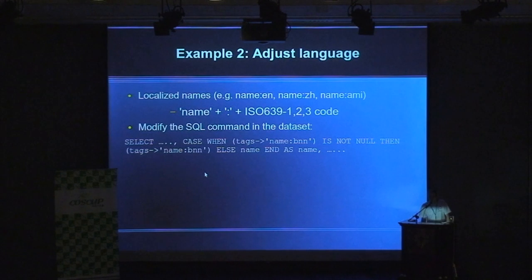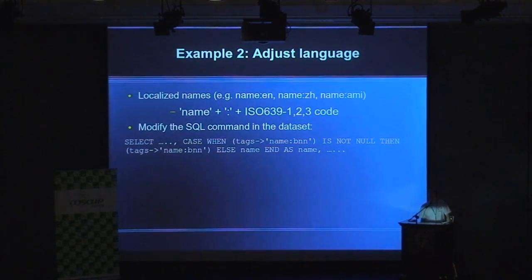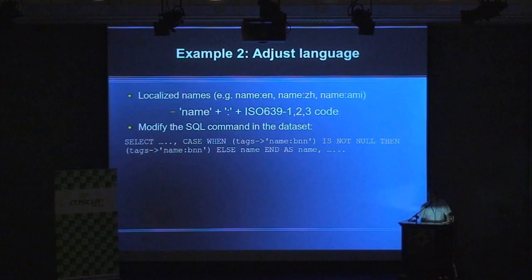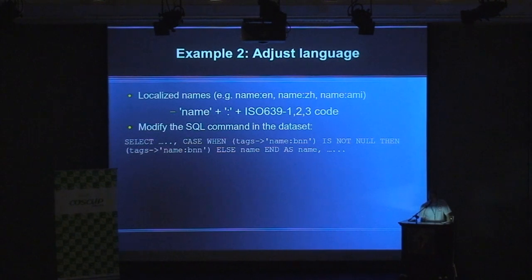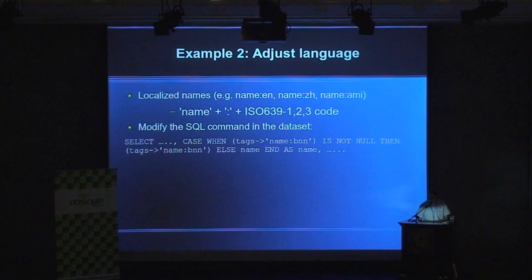Second example: localized names. In some cases we want to create custom maps with localized names in a different language. For example, the default name tag in OSM for Taiwan has Chinese and English. But maybe I want to display another language — for example, an indigenous language like Amis or Bunun.